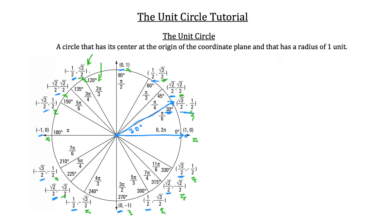I'll also show you the other way of doing these so that you get an actual exact value, like root 3 over 2. The decimal answer that you get from your calculator when you plug in the sine of 120 degrees is actually an approximate value. This value — root 3 over 2 — is an exact value, and I'm going to teach you how to solve for that exact value on all these different angles.